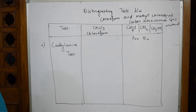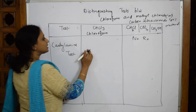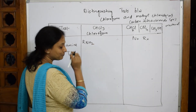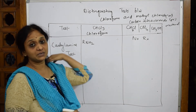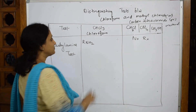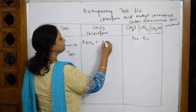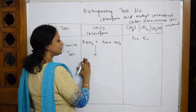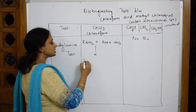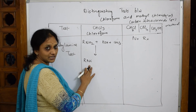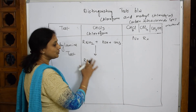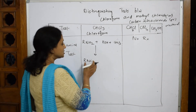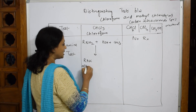Now for the carbylamine reaction: this is a test for primary amine. Take a primary amine — I already covered this carbylamine test in the amines chapter, please watch that video for the mechanism. The reaction is: primary amine + KOH + CHCl₃. This forms alkyl isocyanide as the main product. Please watch the mechanism video for a clear explanation.